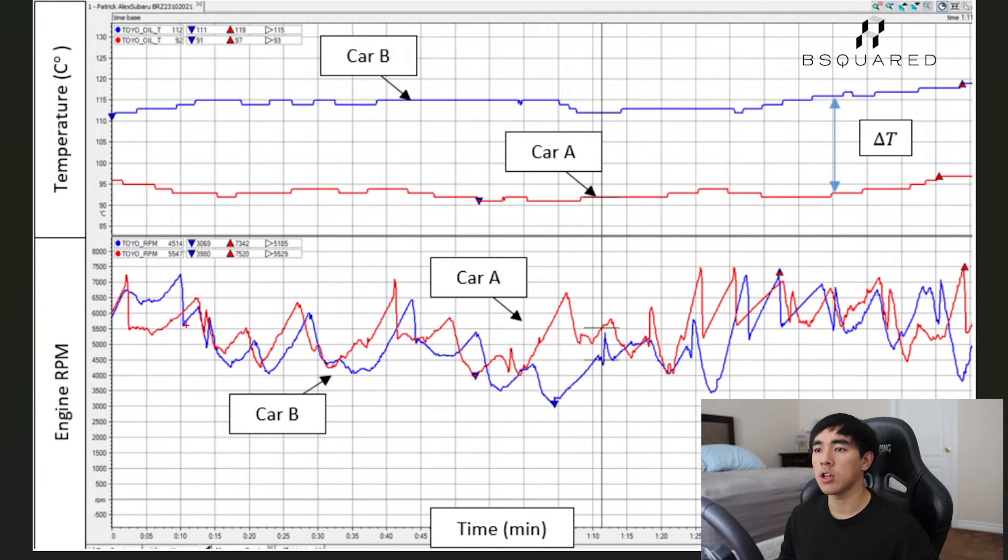And if we go back down to engine RPM and just see the level of aggression for both cars, you can see I was trying to drive both cars to the best of my ability for both of those sessions. I wasn't holding back with any of the cars.